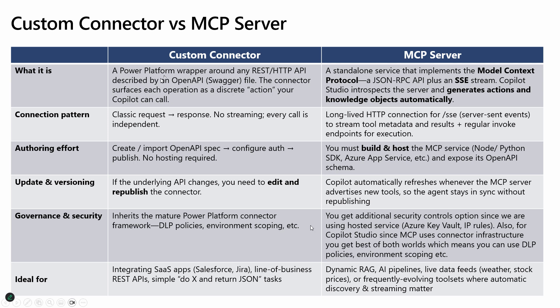So basically, just to level set our understanding of what a custom connector is — it's a wrapper around REST endpoints which exposes every operation as a discrete action in Power Platform. You typically just import an API spec and create a custom connector that can then be leveraged with Copilot Studio or Power Apps. Whereas for MCP server, it's a service that's using a JSON RPC API that supports server-sent events, which is useful for scenarios where you need to stream information or keep the connection open for a longer time.